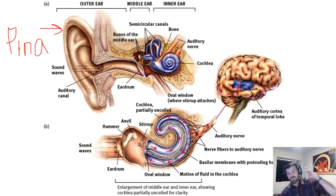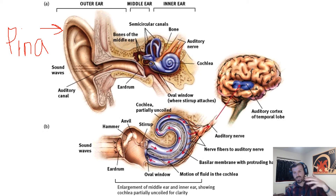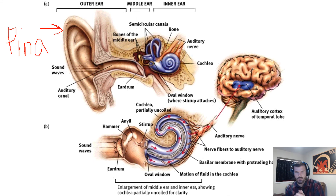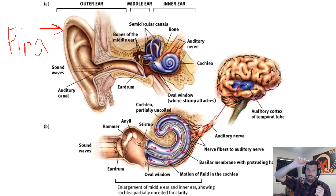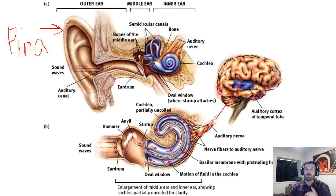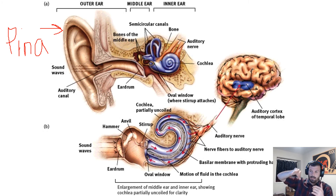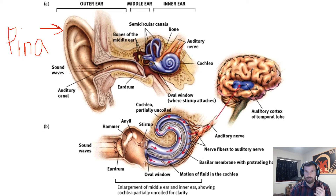So to recap: sound waves travel, the pinna funnels them into the auditory canal, they bounce through the auditory canal and hit the eardrum, the eardrum begins to vibrate — first transduction. Those vibrations go through the bones of the middle ear — hammer, anvil, stirrup — and hit the cochlea. The cochlea begins to vibrate, the fluid inside ripples, and those ripples are picked up by the hair cells — second transduction. Those ripples turn into neural messages that get sent up to the temporal lobe of the brain. And that's how you hear.